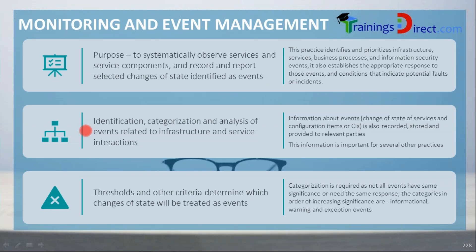Events are categorized and analyzed because action needs to be taken based on category and urgency. Categories usually lead to urgency or priorities. It's important to record information about the event — which configuration item (CI) is affected and what the current state of that CI is — and provide this to relevant parties so the concerned person can take action. This information also propagates to other practices like incident management or problem management.